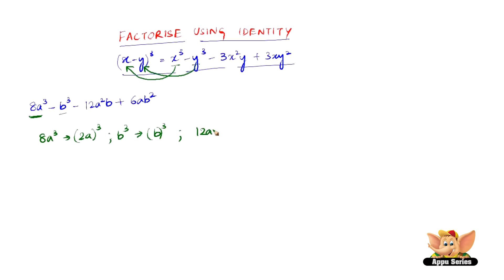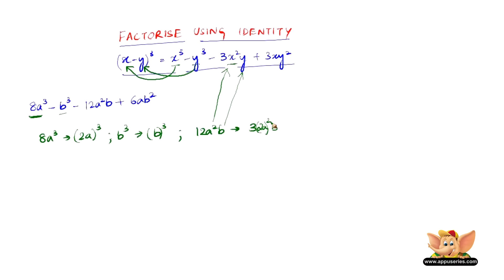Now let us consider 12a squared b, which corresponds to this term. Here, 3 is the constant and y corresponds to b, so we can write b here. What do we write between 3 and b to get 12a squared b? We write 4a squared, but in the form of x squared, that is 2a the whole square. Similarly, we write 3xy squared as 3 into 2a into b squared.